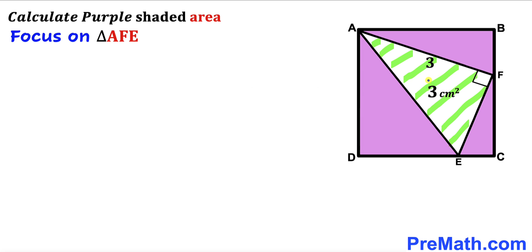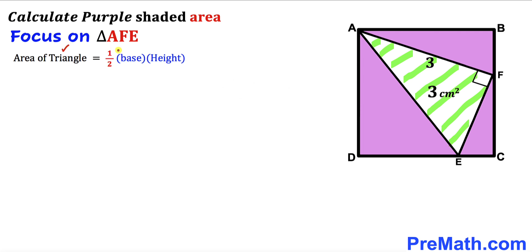Let's focus on the white right triangle AFE. We know this side length AF is 3, and we are interested in calculating the other side length FE as well. Let's recall the area of a triangle formula: area equals one half times base times height. In our case, AF is the base and FE is the height.